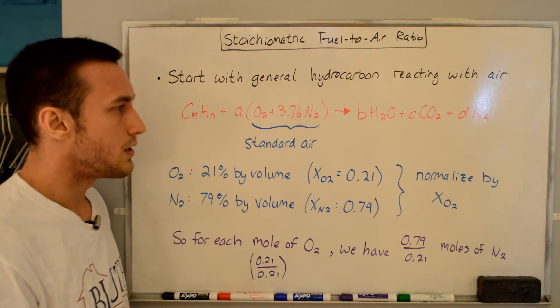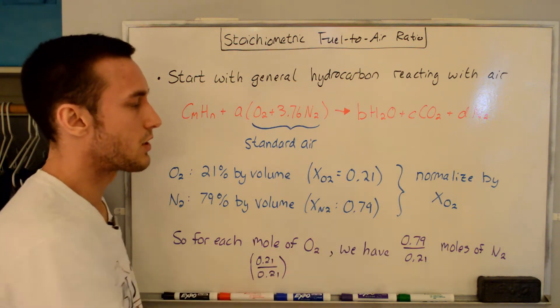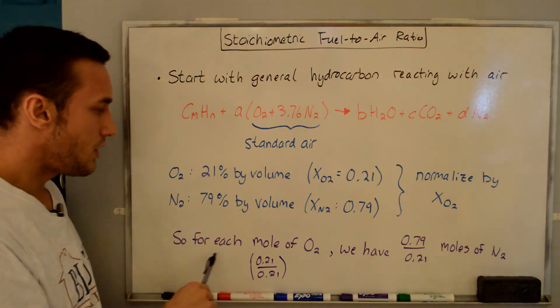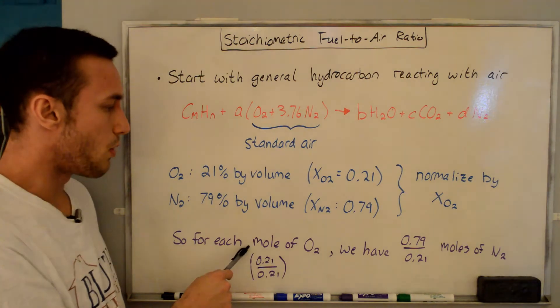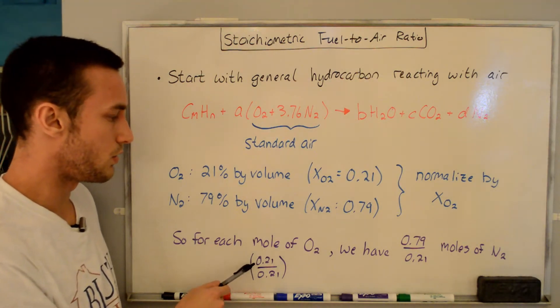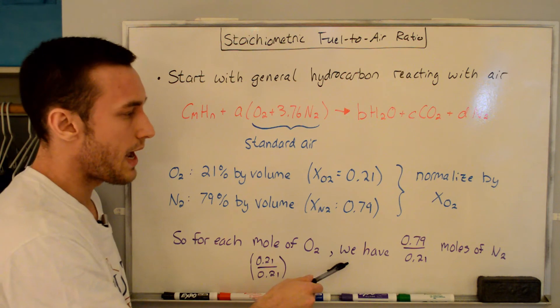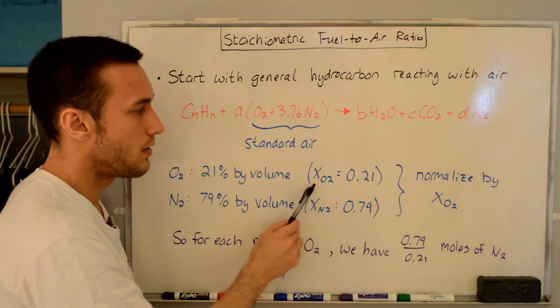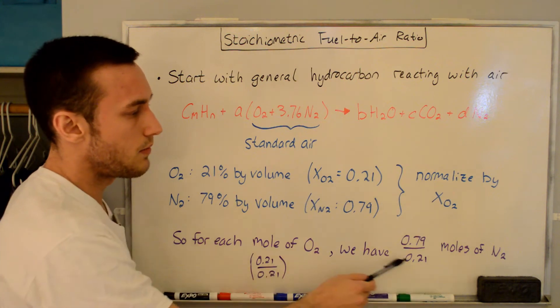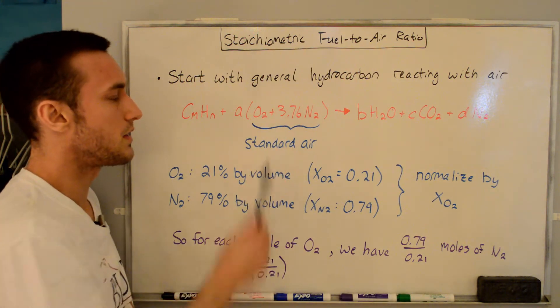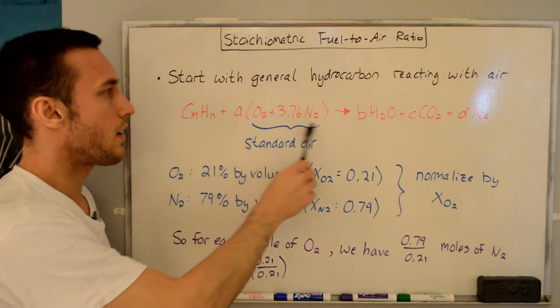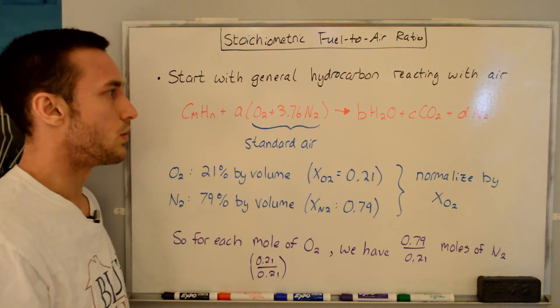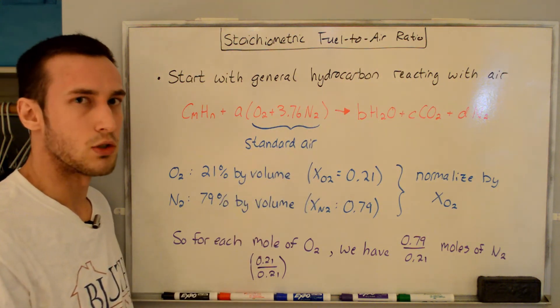And so what we can do then is normalize by the mole fraction of O2. So for each mole of O2, and the single mole comes from the fact that we're normalizing by O2, so 0.21 divided by 0.21 is 1, that means that we have 0.79, that's the mole fraction of N2, divided by 0.21, the mole fraction of O2, moles of N2. And if you do this division here, you end up getting 3.76. So that's why air is given as 1O2 plus 3.76N2.